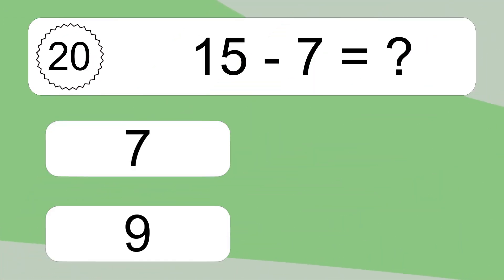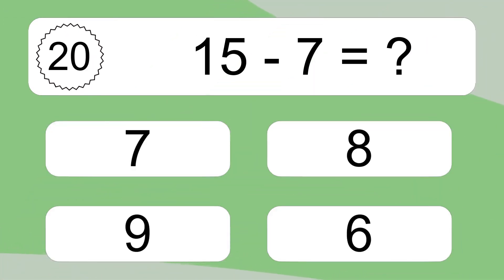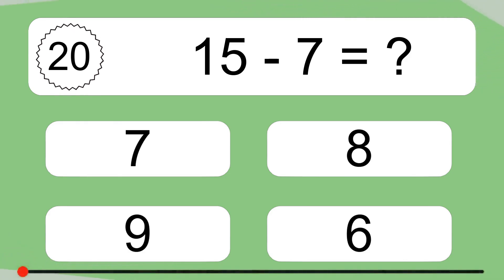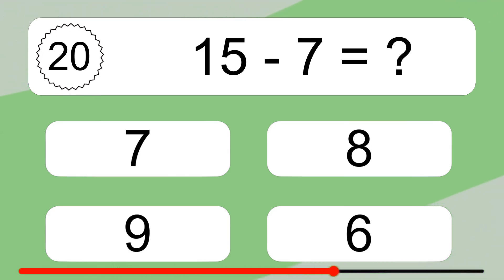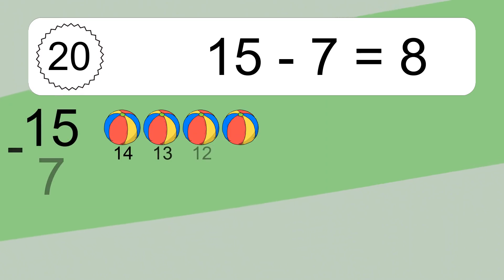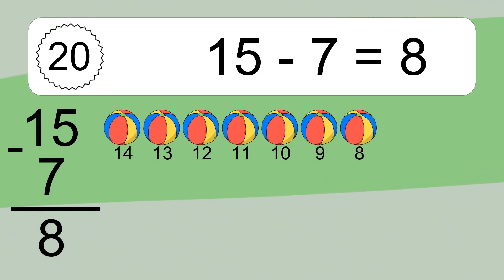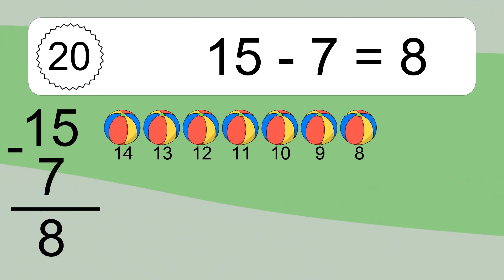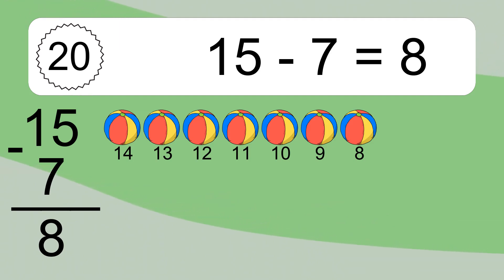15 minus 7 equals what? 15 minus 7 equals 8. Let's count it: 14, 13, 12, 11, 10, 9, 8.